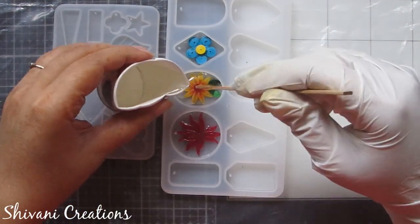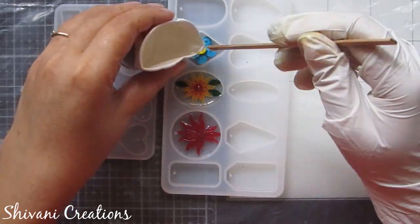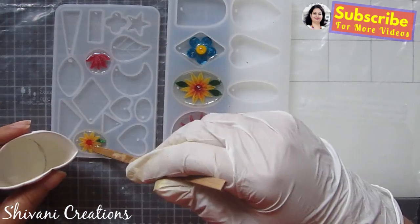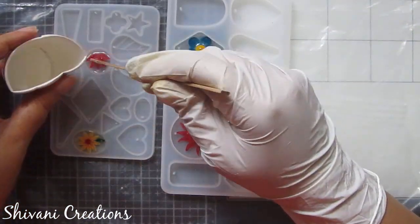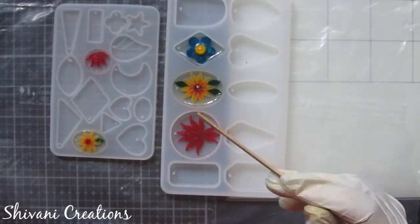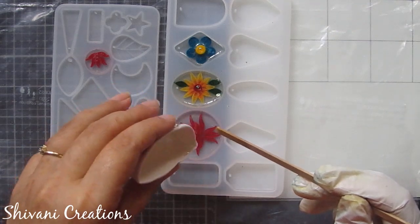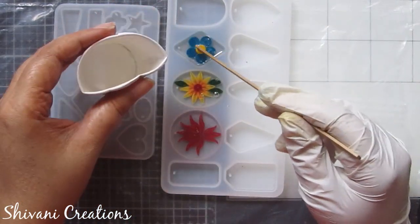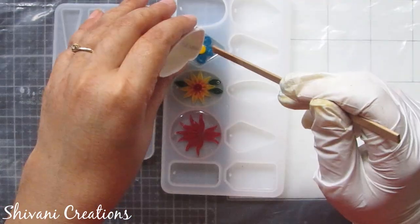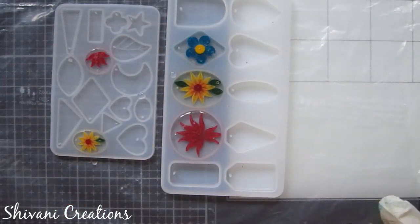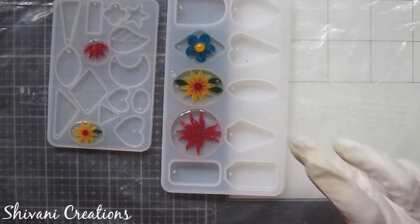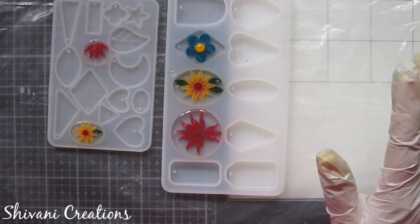So it's done now. I will pour the clear resin on top as well and fill your mold completely till the top. Now allow it to dry completely for twenty four to forty eight hours. Don't fidget with it, just leave it as it is and cover it with some tray or some glasses to protect it from dust.